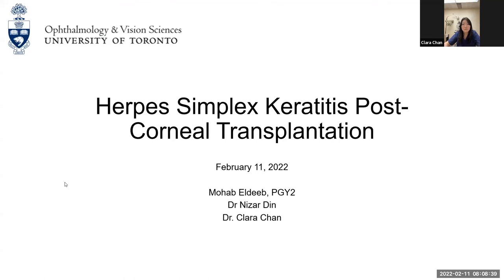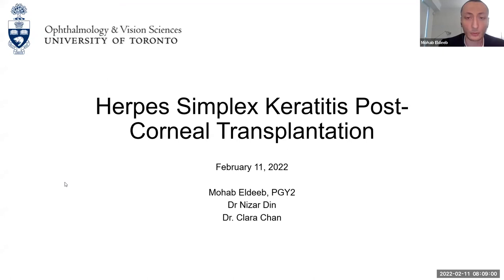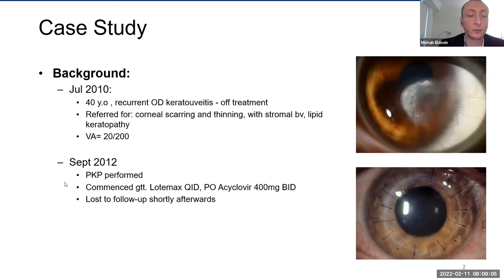Go ahead and take it away, Mohab. All right, thank you very much, Dr. Chan. Good morning, everyone. I am Mohab Eldib, one of the second-year residents at the Department of Ophthalmology and Vision Sciences at the University of Toronto. Today I'll be talking on herpes simplex keratitis and post-corneal transplant. To introduce our patient, he's a 40-year-old male who we saw in July 2010 with history of recurrent keratouveitis. He was referred to us for further management of corneal scarring, stromal thinning with new vascularization and lipid keratopathy. His vision was 20/200 at that time. Penetrating keratoplasty was planned and performed. The patient was started on Lotemax four times a day and oral acyclovir twice a day. Unfortunately, the patient was lost to follow-up shortly afterwards.